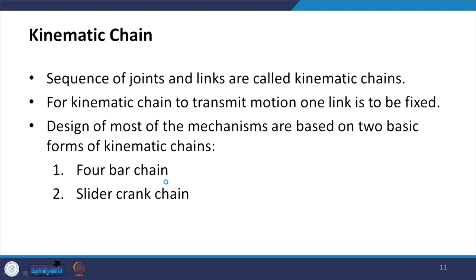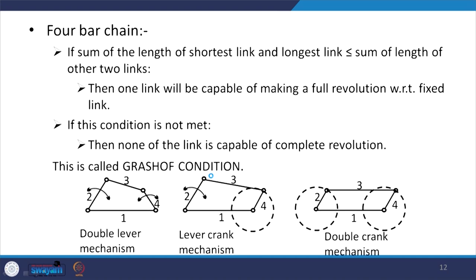The design of most mechanisms is based on two basic forms of kinematic chain: the four-bar chain and the slider-crank chain. In a four-bar chain there are four links — link 1, 2, 3, and 4 — and one of these links is fixed.